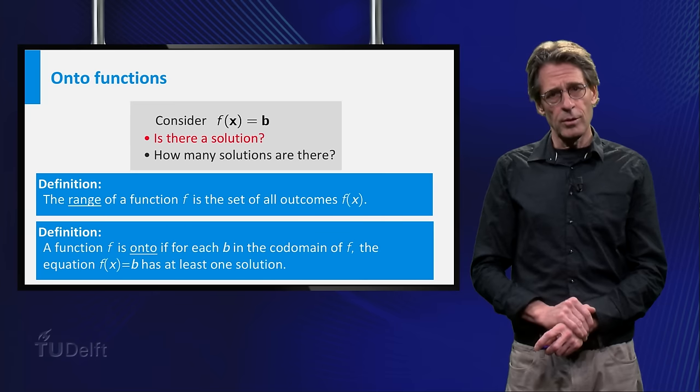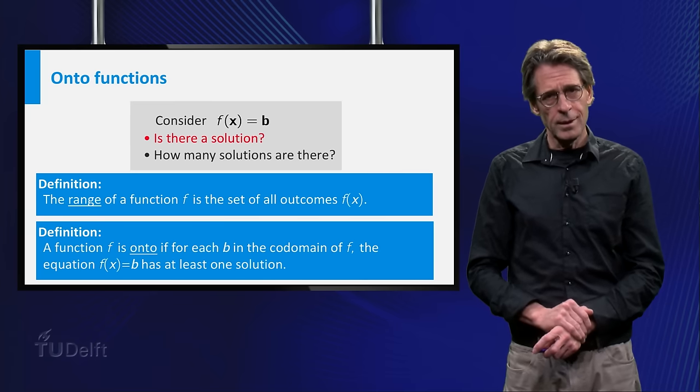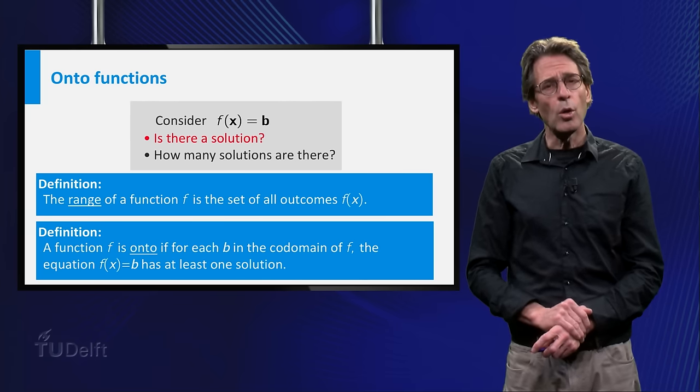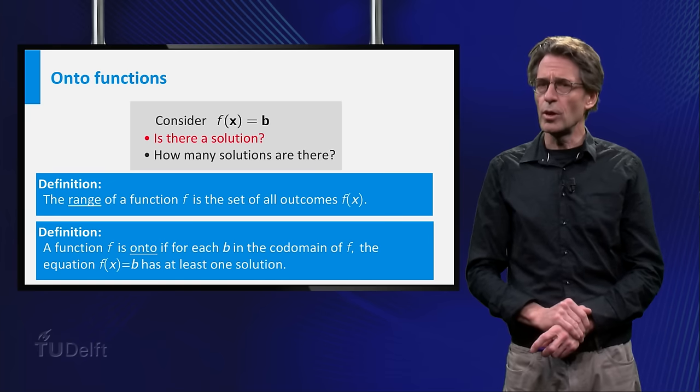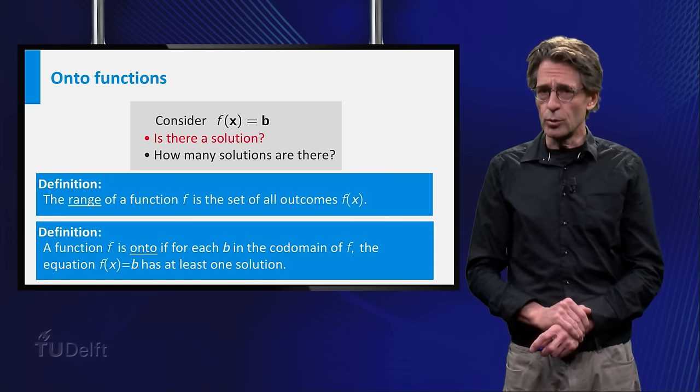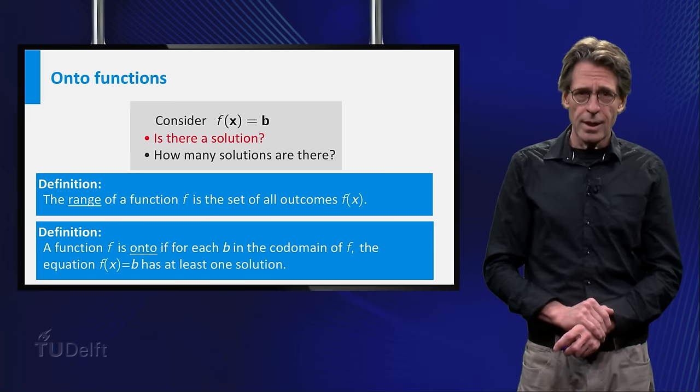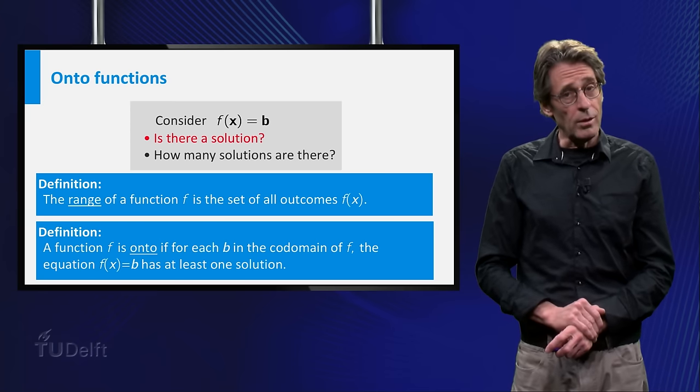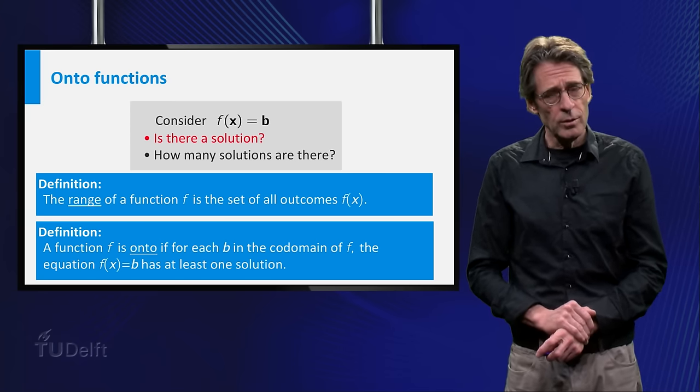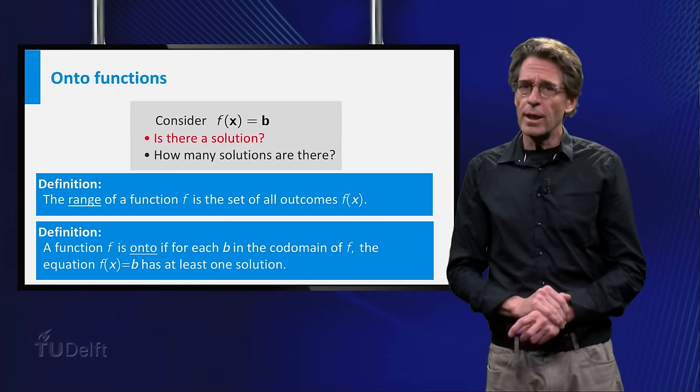If the range of f covers the whole codomain, we say that the function is onto, or surjective. Thus, a function f is onto if the equation f of x equals b has a solution, or rather at least one solution, for all possible elements b in the codomain.